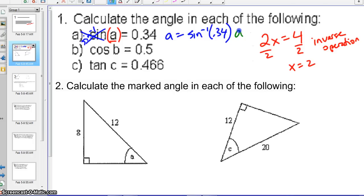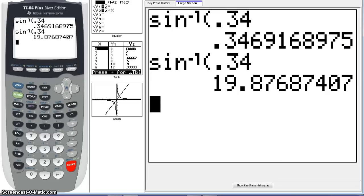Now the same thing for letter B. I need to take the inverse cosine in order to find this, inverse cosine of 0.5. Go back to my calculator, 2nd cosine of 0.5, and I get 60.